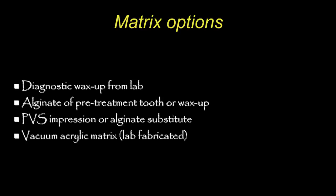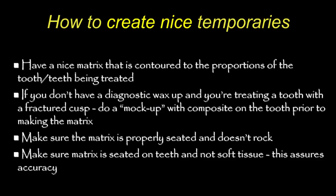If you have a fractured tooth — say a molar with one cusp missing that you're going to prep — what I typically do is dry the area, place a little composite directly on there without any adhesive, quickly sculpt it and cure it. It takes about 30 seconds to a minute, and now you've got a general shape and contour so you can make your template with less fiddling when making the provisional.